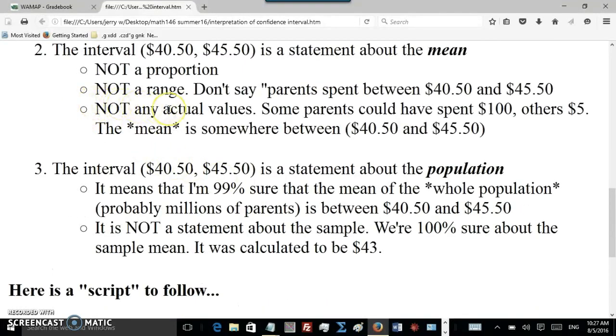And that's the third point. It's not actual values. So you don't say parents spent between these amounts. Some parents could have spent $100. Some maybe spent only $5. But on average, the sample is $43. And on average, we think the population mean is somewhere in this range, right there.